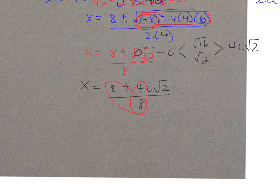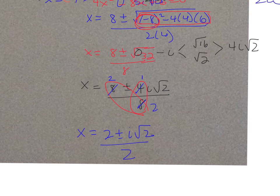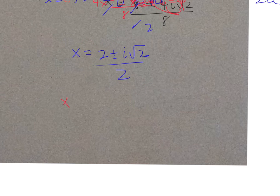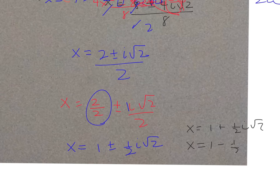Simplify the fraction — 4 goes into 8, 4, and 8 evenly. Dividing everything by 4: x = (2 ± i√2) / 2. This can be split as 2/2 ± i√2/2, and 2/2 = 1, giving x = 1 ± (1/2)i√2. The two roots are x = 1 + (1/2)i√2 and x = 1 − (1/2)i√2.